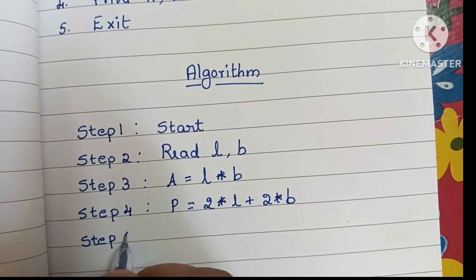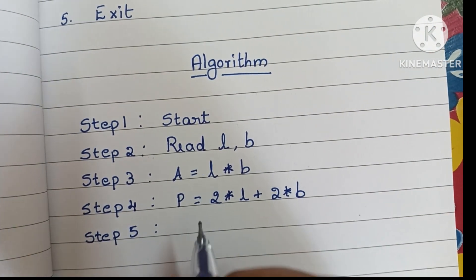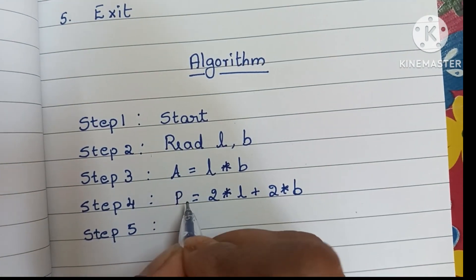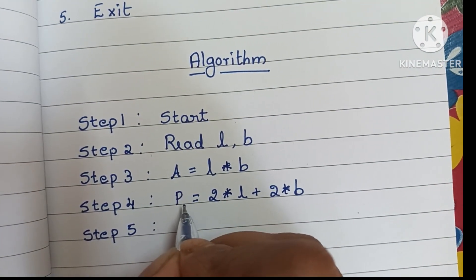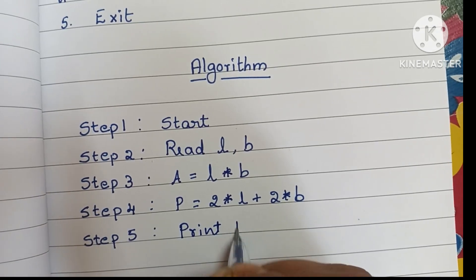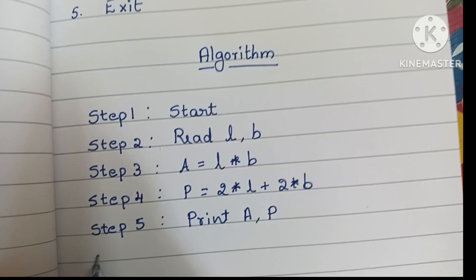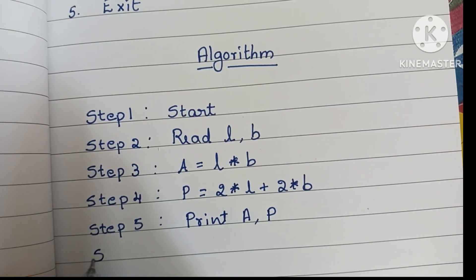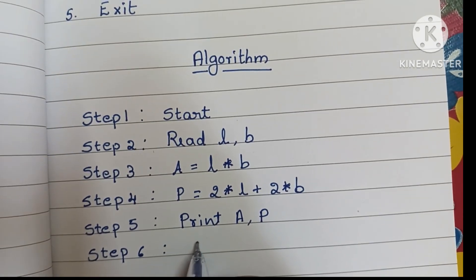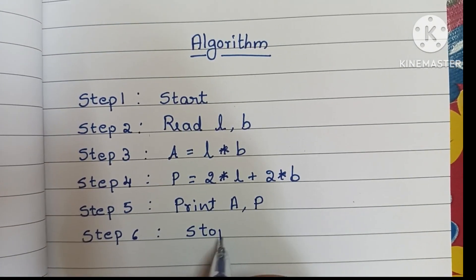In step 5, we have to print two values — the area of rectangle and the perimeter of the rectangle, so we write: print A, P. In step 6, we have to stop the algorithm using the stop statement.